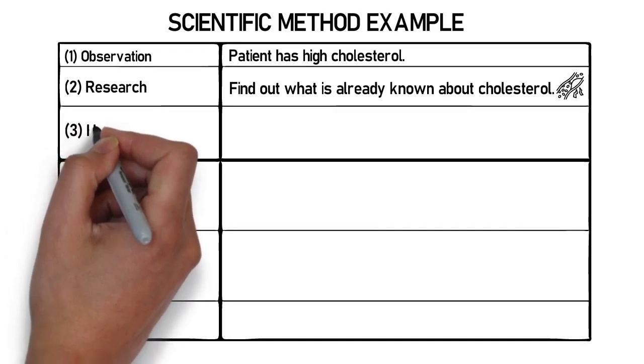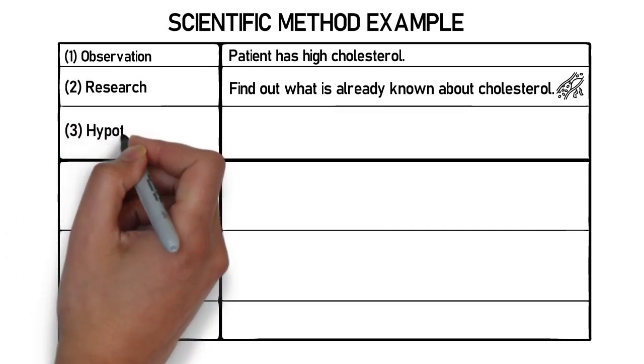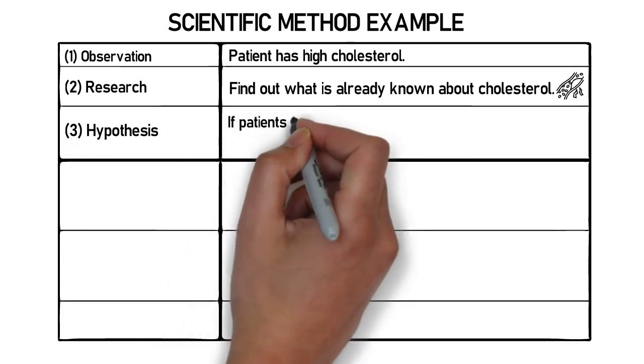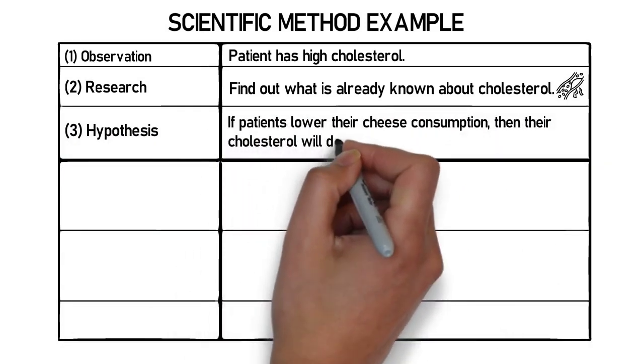Next, based on what we already know and trying not to repeat what is already known, we formulate our hypothesis. For example, if patients lower their cheese consumption, their cholesterol levels will decrease.